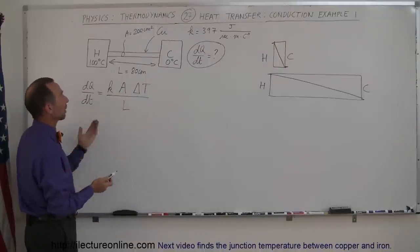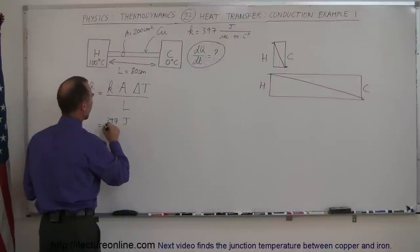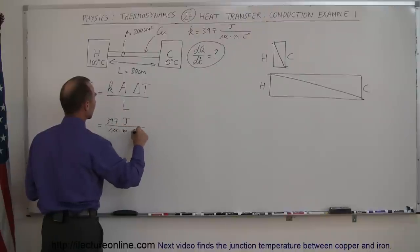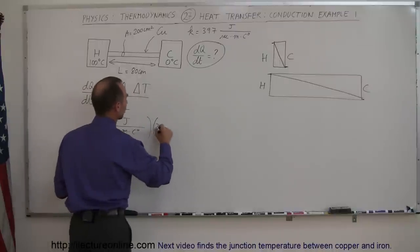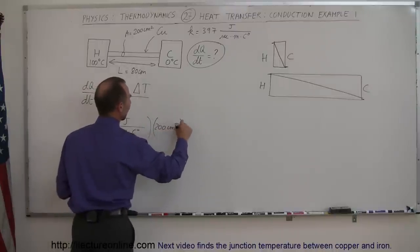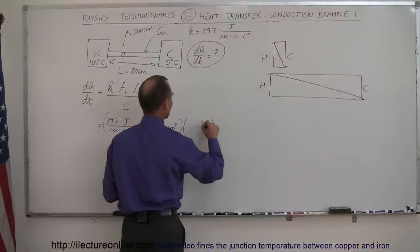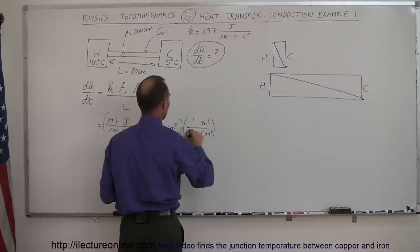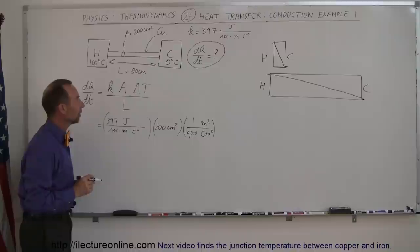Okay, here's the equation, let's plug in the numbers that we have. So for K, we have 397 joules per second times meters times centigrade degrees. The cross-sectional area, which is 200 square centimeters, and then of course we have to convert that to square meters, because we want to use standard units here. So we have a meter squared, centimeters squared, and one square meter is 10,000 square centimeters, so we have a good conversion there.